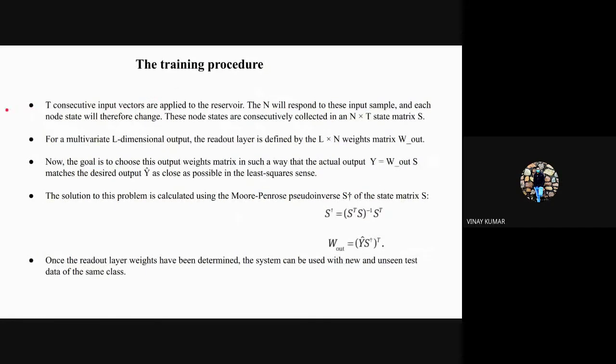The training procedure: if we apply T consecutive input vectors to the reservoir, it will respond to them and each node's state will change. These nodes are collected as a state matrix which is n cross T matrix—the S matrix. For multivariate l dimensional output, the readout is defined as l cross n weight matrix.